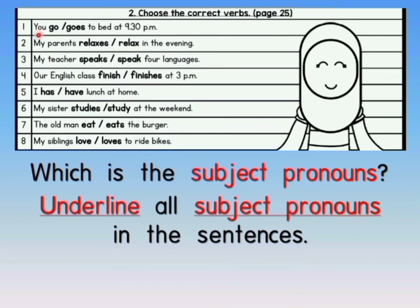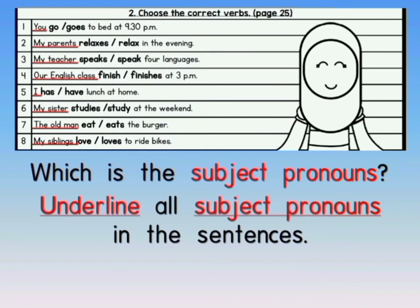Look at sentence 1: You go or goes to bed at 9:30pm. Which is the subject pronoun? Yes, the word you is the subject pronoun. Sentence 2: My parents relax or relaxes in the evening. Which is the subject pronoun? The word my parents. Sentence 3: My teacher speaks or speak four languages. The word my teacher is the subject pronoun. Continue until number 15. The subject pronoun for number 5 is I, number 6 is my sister, number 7 is the old man, and number 8 is my siblings. Underline the subject pronouns until number 15.